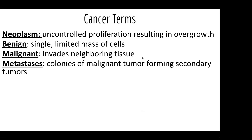Moles or polyps are examples of different types of growths. Benign neoplasms are a single limited mass of cells — those are the ones that aren't going to invade or cause metastasis, so we're not too worried about them. Malignant neoplasms are the ones we traditionally think of as cancer; they have the ability to invade other tissues.